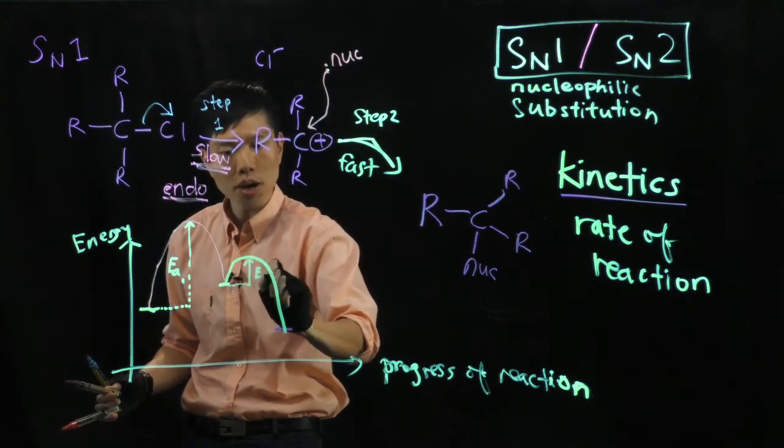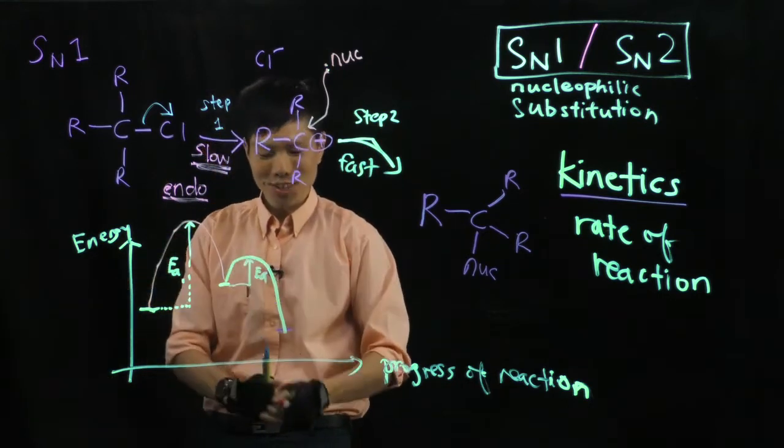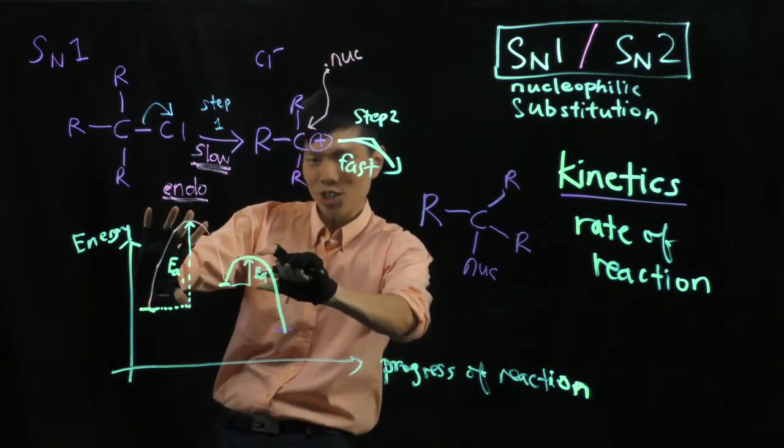The energy barrier is much lower because of the charge attraction is fast. So, this is your EA2. Do you see, comparatively, the height difference? See? So much difference.